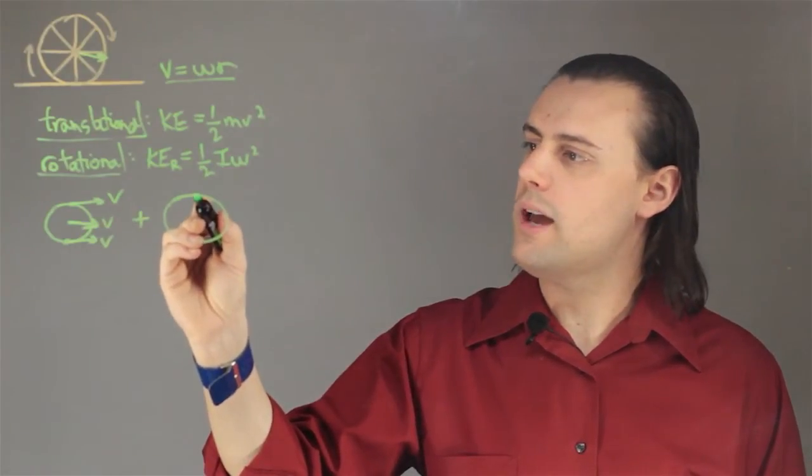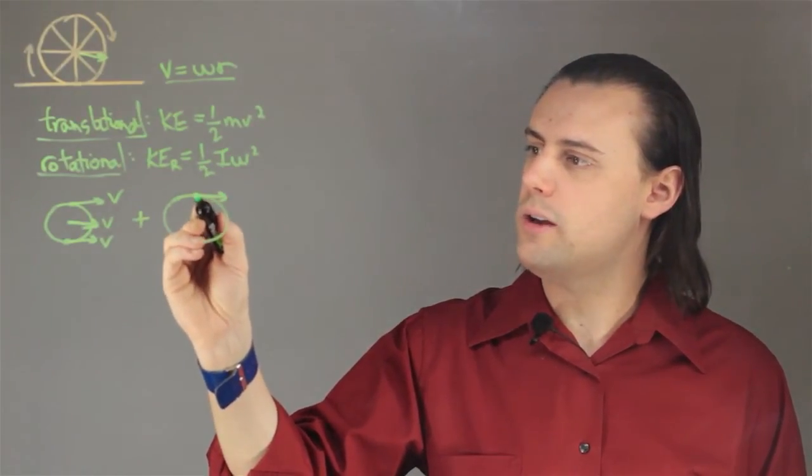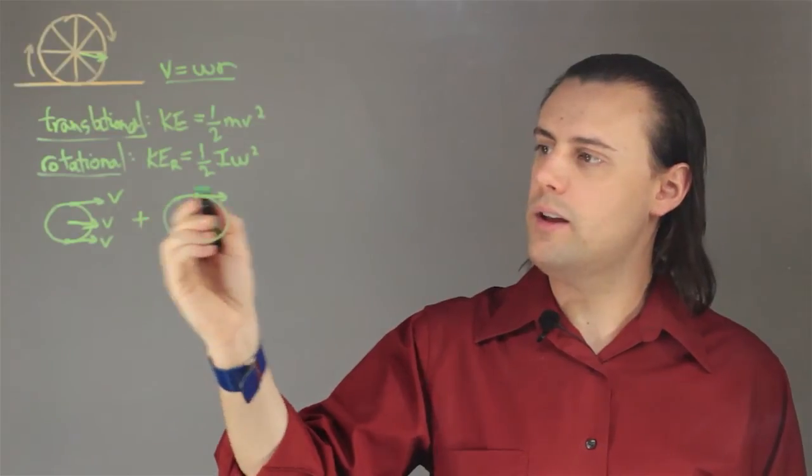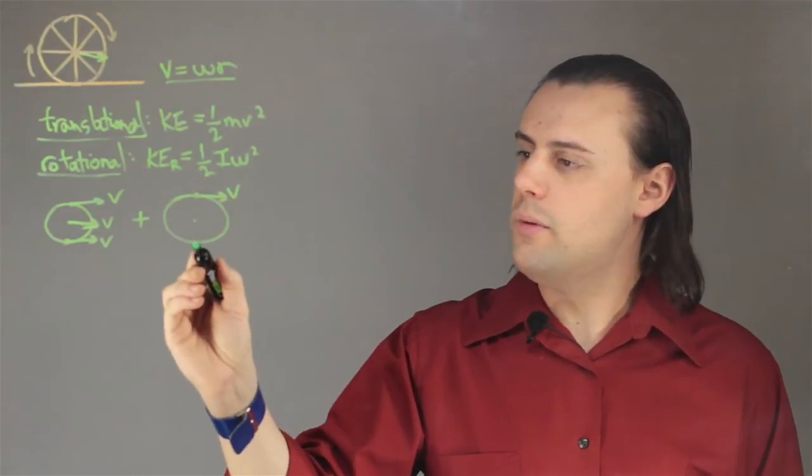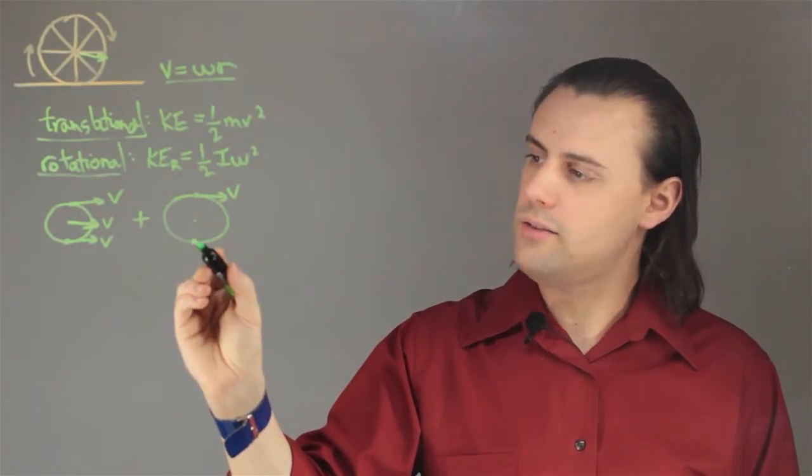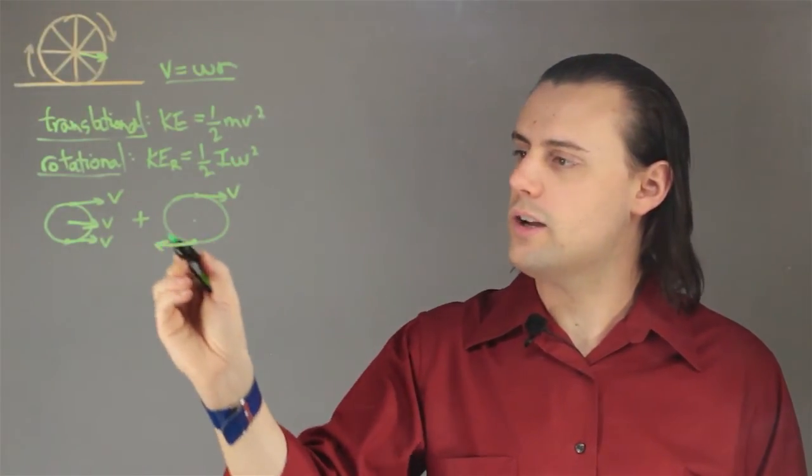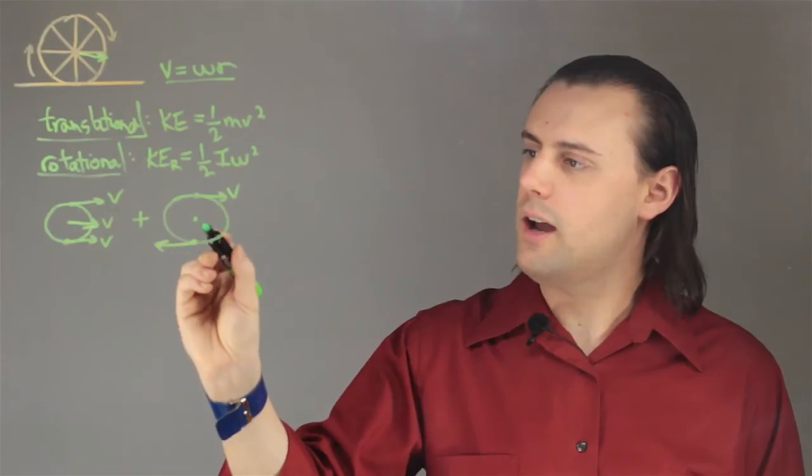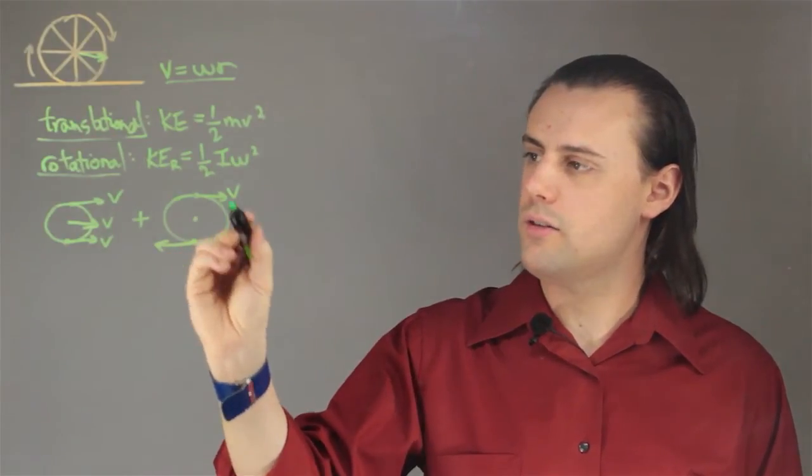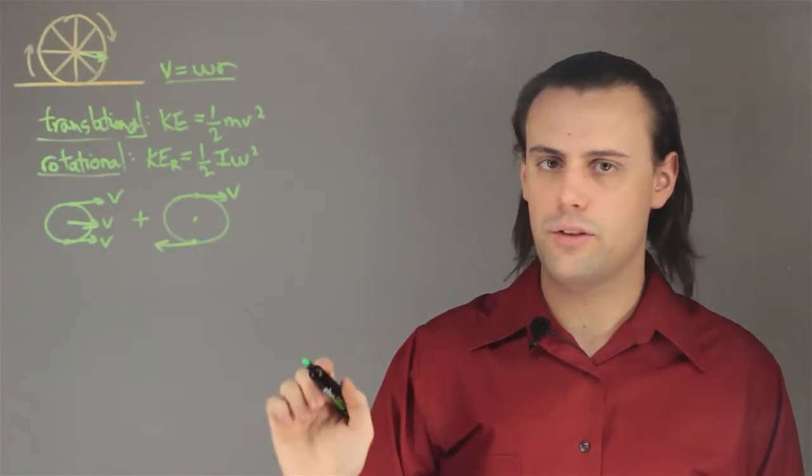So here we have this point on top of the wheel moving in this direction, but the mass on this end of the wheel is moving in the opposite direction because it's rotating, and there is zero velocity in this rotational frame for the center.